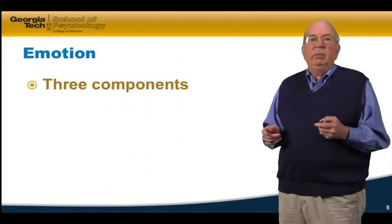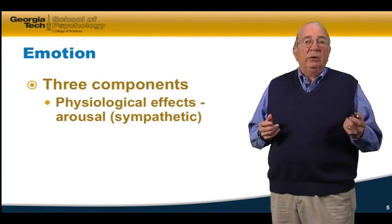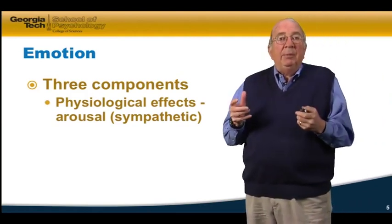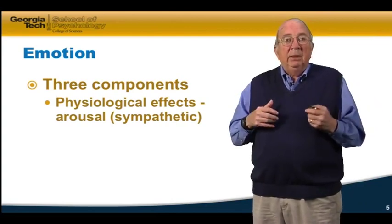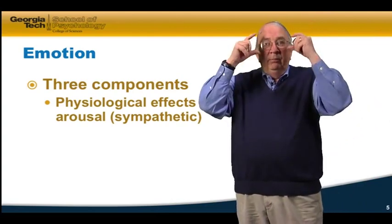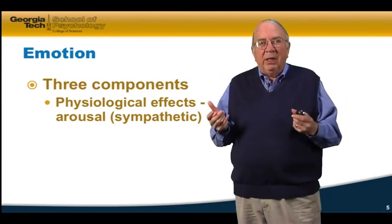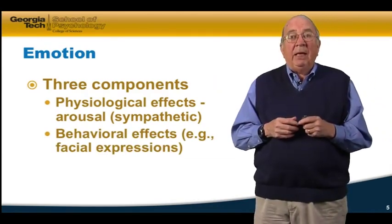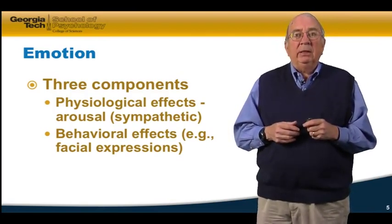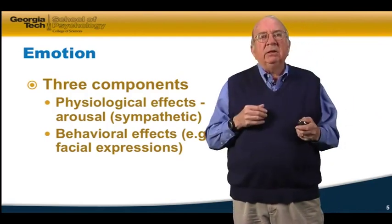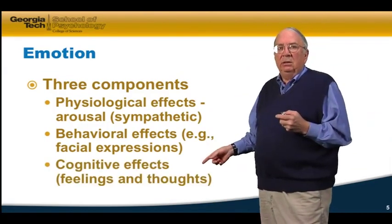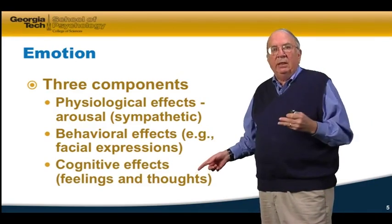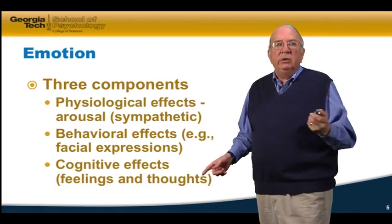Emotion has three components. It has physiological effects — arousal — which is really the sympathetic nervous system. When we get very emotional and aroused, things happen like our hair stands up, our heartbeat increases, and our pupils dilate. There are all kinds of physiological responses to high arousal. We also have a behavioral effect, like a particular facial expression — if I'm happy I look like this, and if I'm sad I look like this — really controlled by the muscles in the face. And we have cognitive effects, meaning an interpretation of what the stimulus is. All three of these are important in understanding emotion.